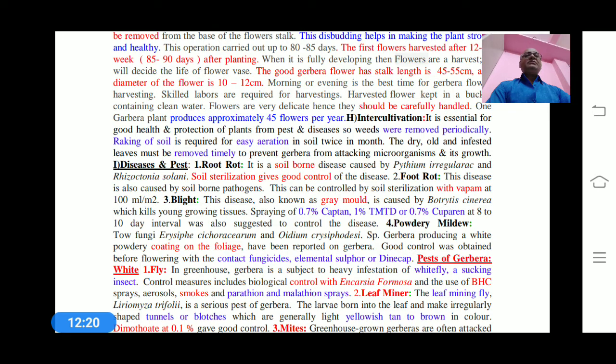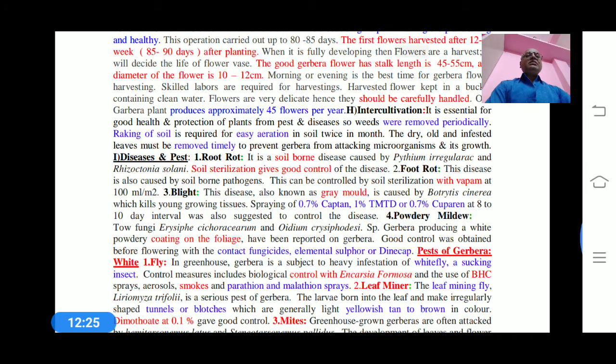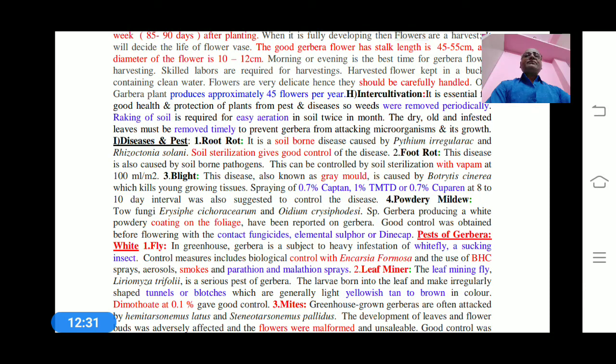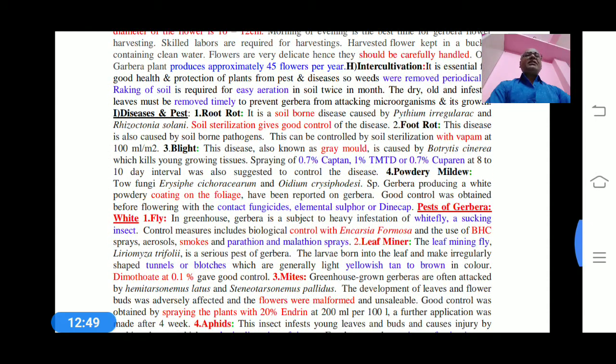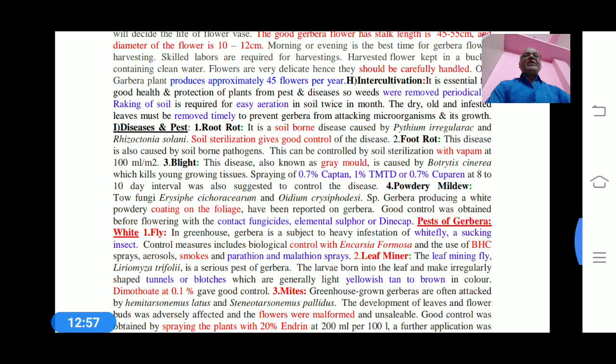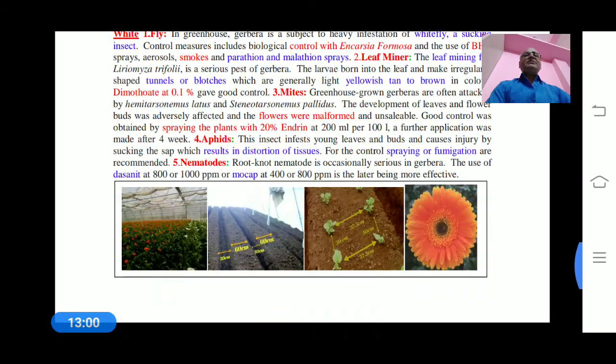For good health and protection of the plant from pests and diseases, weeds are thoroughly and continuously or periodically removed from the beds where plants are cultivated. Raking of soil is required for aeration, generally twice a month. Dry and old infested leaves must be removed from the polyhouse to prevent gerbera from attacking different types of microorganisms or pathogens.